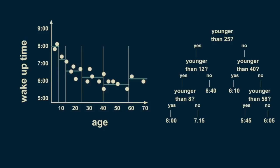The resulting tree lets us make a numerical estimate depending on someone's age. To estimate the wake-up time for a 36-year-old, I start at the top of the tree: are they younger than 25? No — go right. Are they younger than 40? Yes — go left. The estimate becomes 6:10 a.m. The structure of the decision tree lets you sort people of any age into their respective bin and make an estimate about their wake-up time.